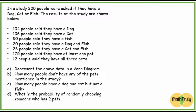Hey guys, and welcome to part two of my video on Venn diagrams. In this video, we're actually going to draw up a Venn diagram given the information that we have. The information says: in a study, 200 people were asked if they have a dog, cat, or fish. The results of the study are shown below.